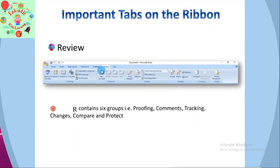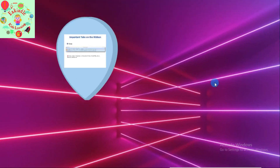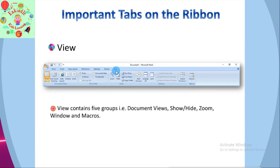Next comes the Review tab. It is the sixth tab in the ribbon. This tab offers important commands to modify your document. It helps you proofread your content, add or remove comments, track changes, etc. The Review tab has six groups of related commands: Proofing, Comments, Tracking, Changes, Compare, and Protect.